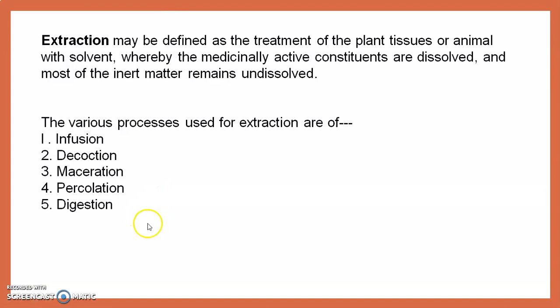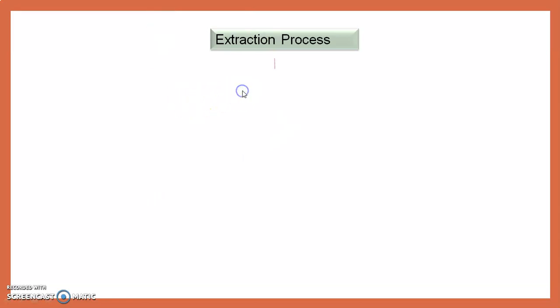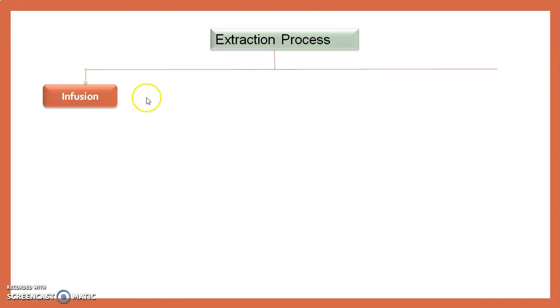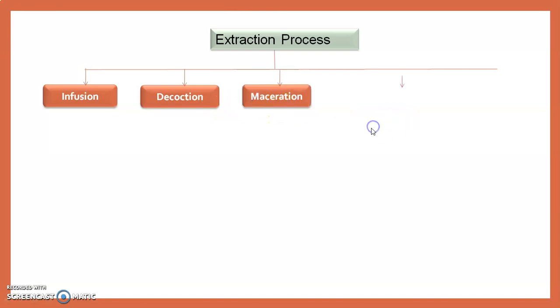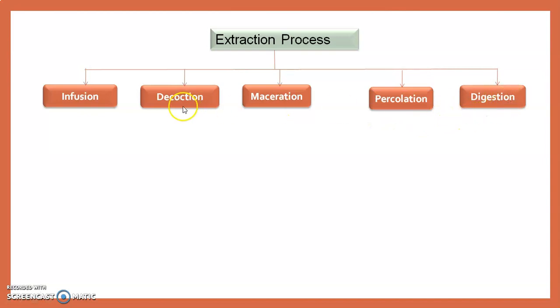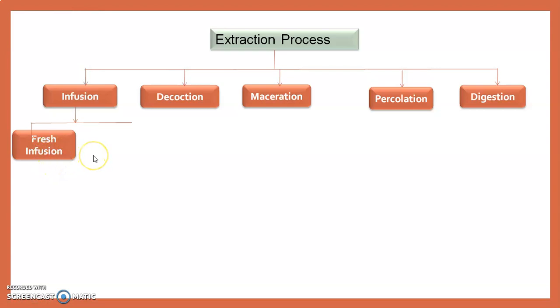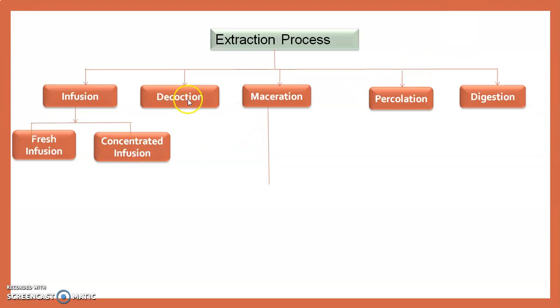The various processes used for extraction are infusion, decoction, maceration, percolation, and digestion. Extraction is mainly divided into these five categories. Infusion is also divided into two parts: fresh infusion and concentrated infusion.